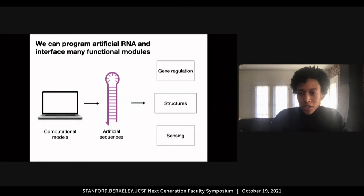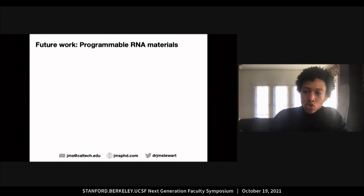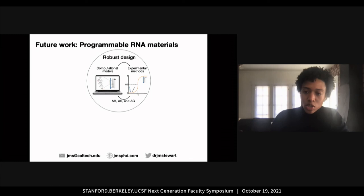At the beginning of this talk, I mentioned how we can use computational models to build artificial RNA sequences to carry out functions such as gene regulation, building structures, and sensing specific molecules. We can also interface these modules to build structures with gene regulation and sensing capabilities. For my future work, I will build a new class of programmable RNA materials. Rapid RNA degradation and limited design tools for multi-stranded RNA secondary structure prediction are challenges that must be addressed in order to build RNA materials useful for diagnostics and therapeutic treatments. I will incorporate nuclease-resistant chemical modifications in RNA to build robust assemblies and use experimental methods to obtain thermodynamic parameters to improve RNA structure prediction methods.